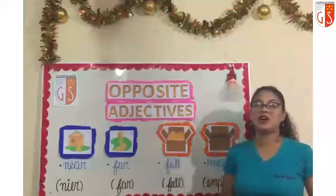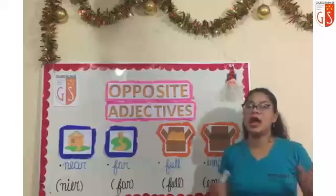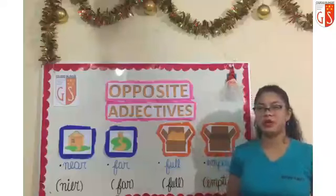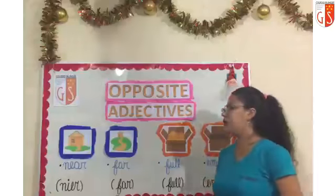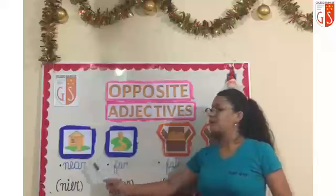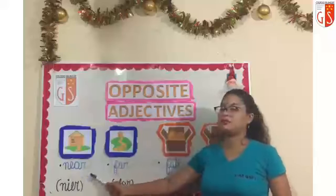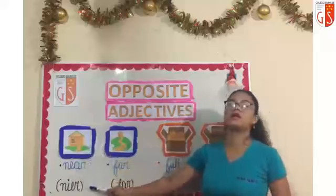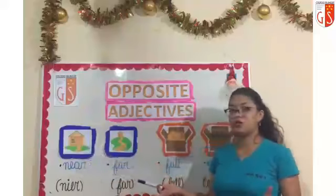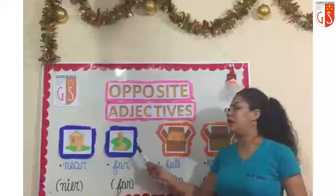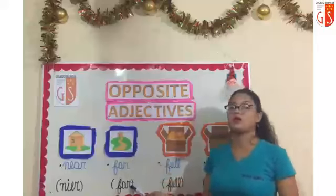Now we are going to practice the pronunciation. Ahora practiquemos la pronunciación. Come on, let's start. Cerca — near. Cerca en inglés se dice near. Lejos — far. Lejos en inglés es far.